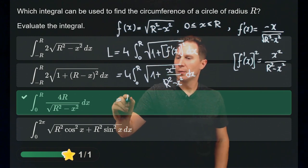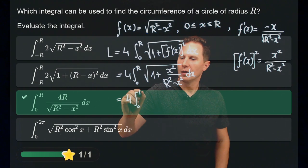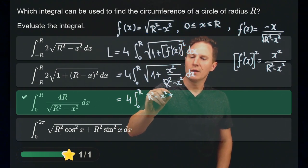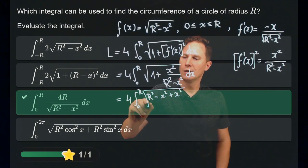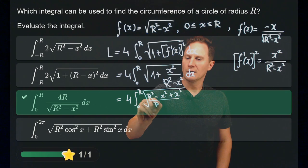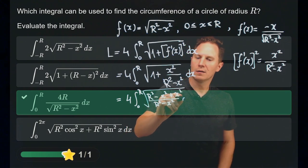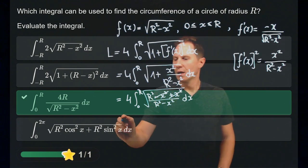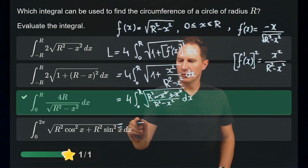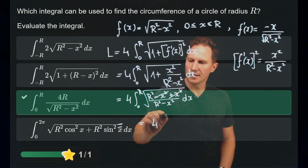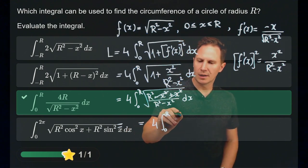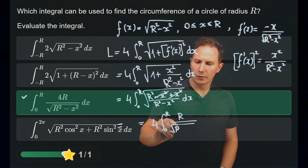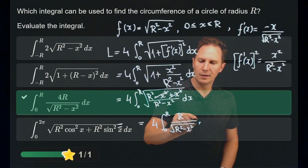Bringing to a common denominator gives us (r² − x² + x²) in the numerator and (r² − x²) in the denominator. The −x² and +x² cancel, leaving 4 times the integral from 0 to r of the square root of r² divided by (r² − x²), dx — which simplifies to r over √(r² − x²).